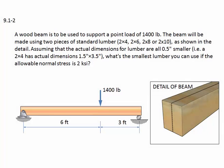Problem 9.1-2. A wood beam is to be used to support a point load of 1,400 pounds. The beam will be made using two pieces of standard lumber: 2x4s, 2x6s, 2x8s, or 2x10s, as shown in the detail. Assuming that the actual dimensions for the lumber are all a half inch smaller than the nominal dimensions, in other words, a 2x4 has actual dimensions of 1.5 inches by 3.5 inches, what's the smallest lumber you can use if the allowable normal stress is 2 KSI?